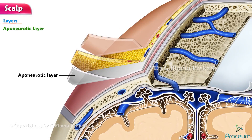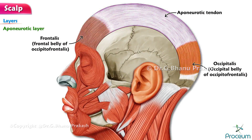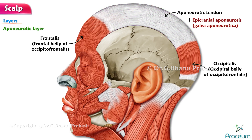Aponeurotic layer. The deepest layer of the first three layers is the aponeurotic layer. Firmly attached to the skin by the dense connective tissue of the second layer, this layer consists of the occipitofrontalis muscle. It has a frontal belly anteriorly, an occipital belly posteriorly, and an aponeurotic tendon — the epicranial aponeurosis, also known as galea aponeurotica. Galea is Latin for helmet.